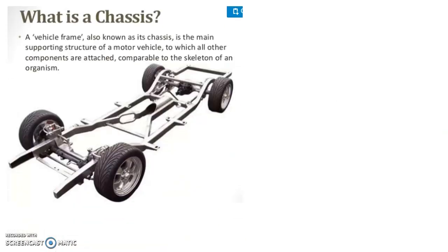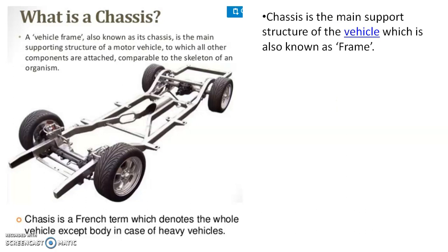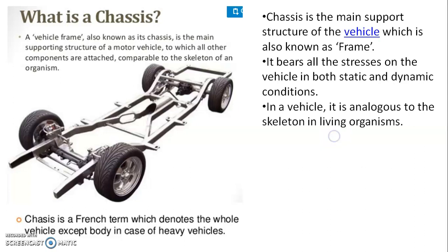What is chassis? A vehicle frame, also known as its chassis, is the main supporting structure of a motor vehicle to which all other components are attached, comparable to the skeleton of an organism. Chassis is a French term which denotes the whole vehicle except body in case of heavy vehicles.